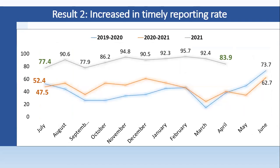Result number two: there was an increase in timely reporting rate. The reporting rate was only 52.4% but has increased to 77.4%, and as we progressed through 2021 it reached 83.9%. This is the result of interventions including on-site coaching to track reporting status using the DHIS2 platform, sharing reporting status with all health workers during monthly meetings, and using the DHIS2 platform for immediate feedback. We also used other social platforms like email, Messenger, and Viber for immediate feedback.